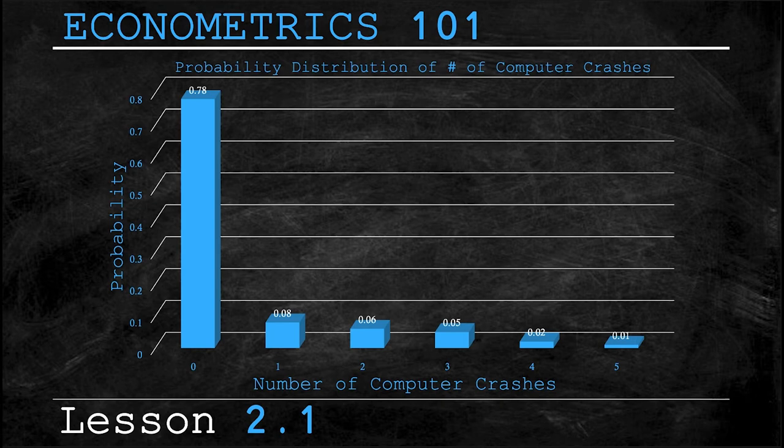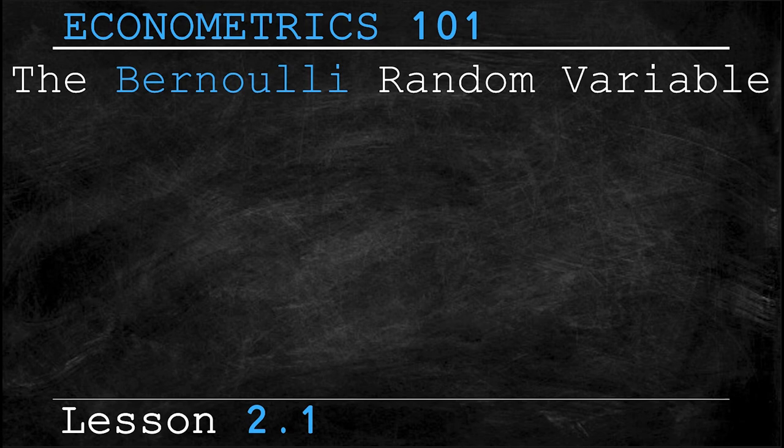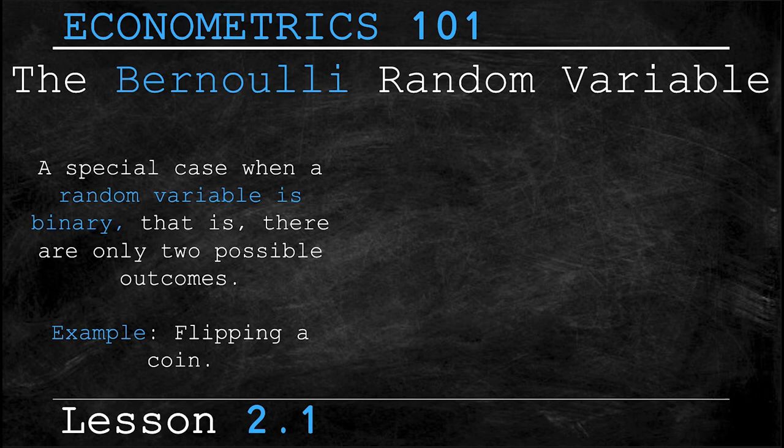Next we're looking at a special case of discrete random variables named after the 17th century Swiss mathematician Jacob Bernoulli and that is the Bernoulli random variable. In this unique case the random variable is binary. The easiest example to illustrate this is flipping a coin. There's the outcome you land on heads and the outcome that you land on tails. That's it.